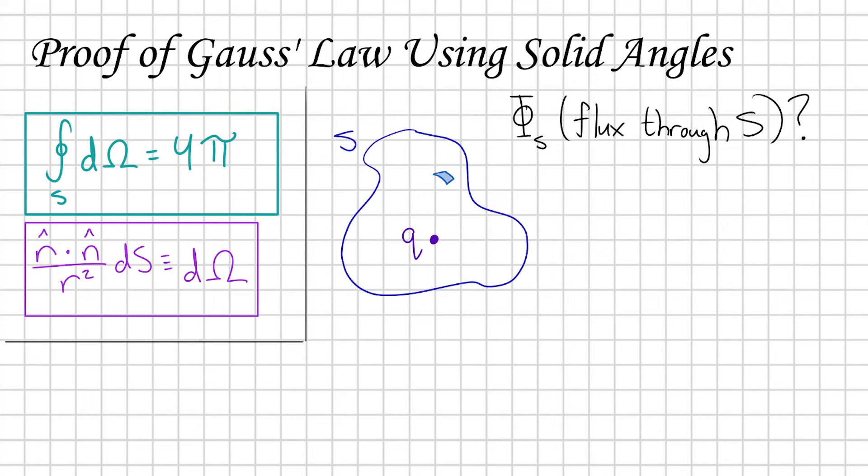We can once again break this surface down into a bunch of dS patches, each with an n-hat unit vector. And again, we can point to each of these dS patches with a position vector r and define an r-hat unit vector. So first let's determine the amount of flux through one of these patches.